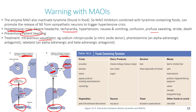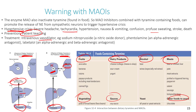Foods containing tyramine include fruits, dairy products, alcohol, processed meats, chocolate, some sauces, and some vegetables, all of which must be avoided by patients on MAOIs.